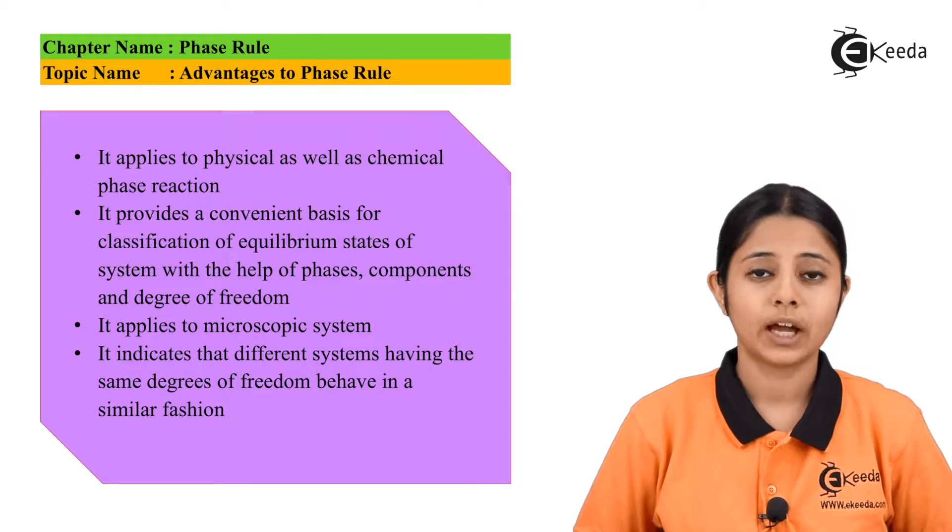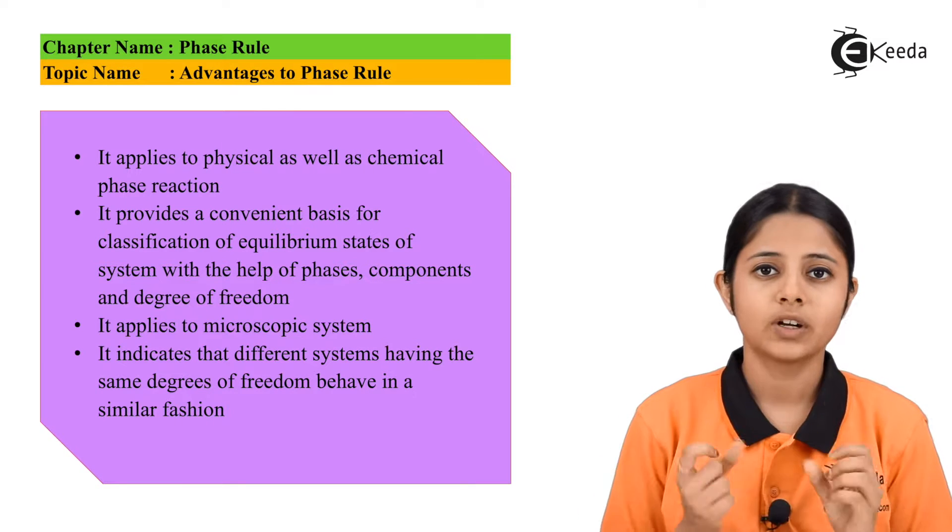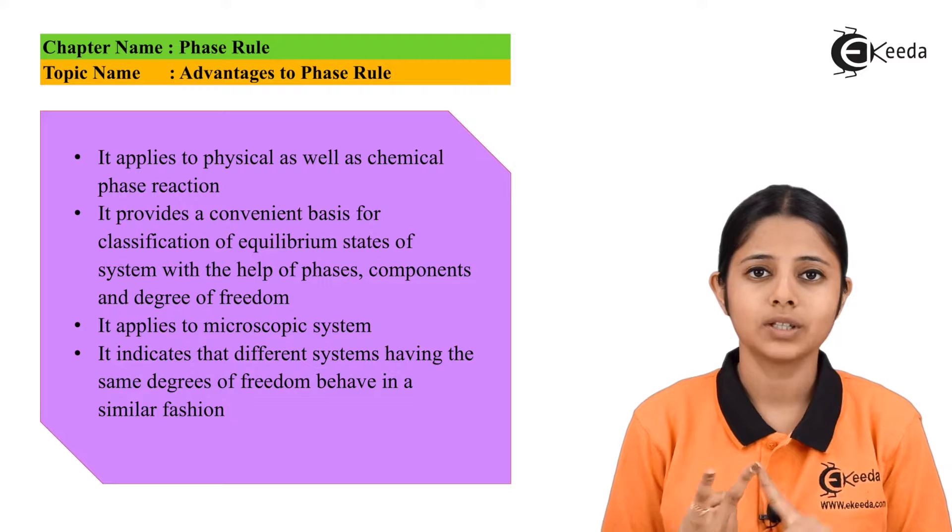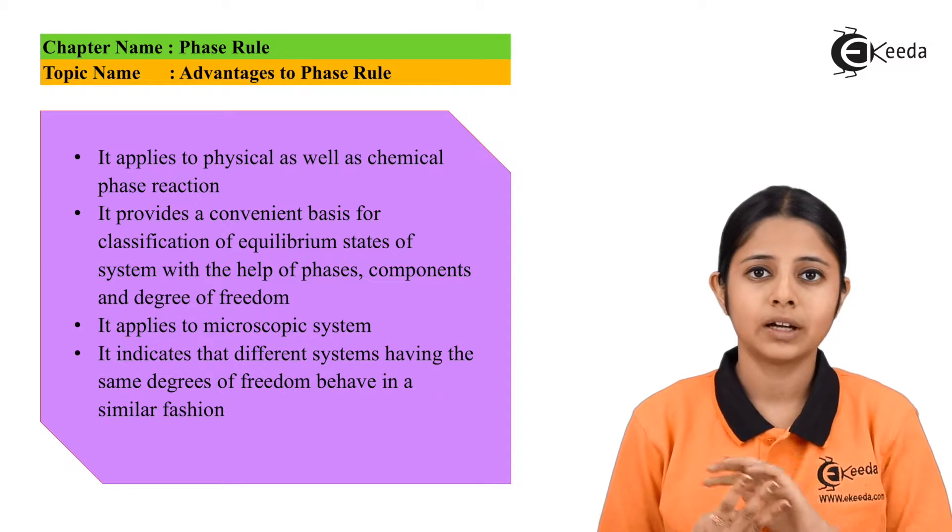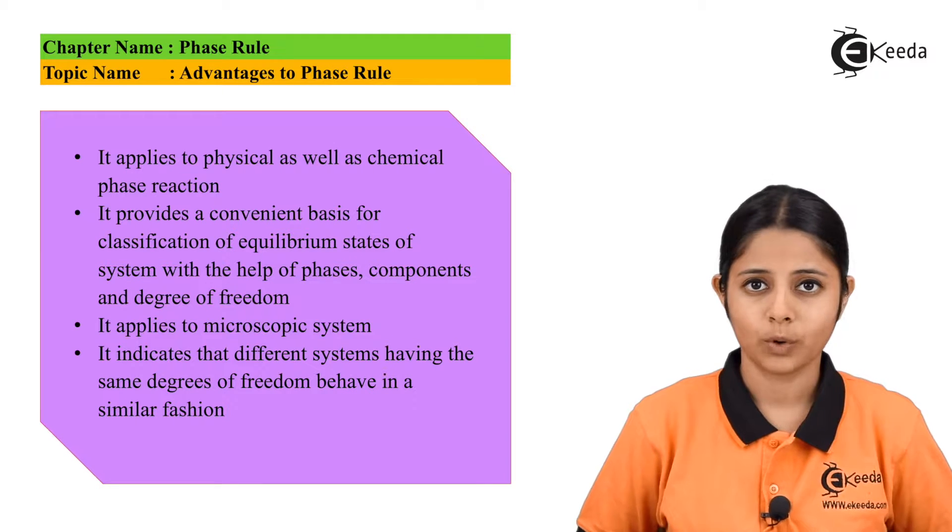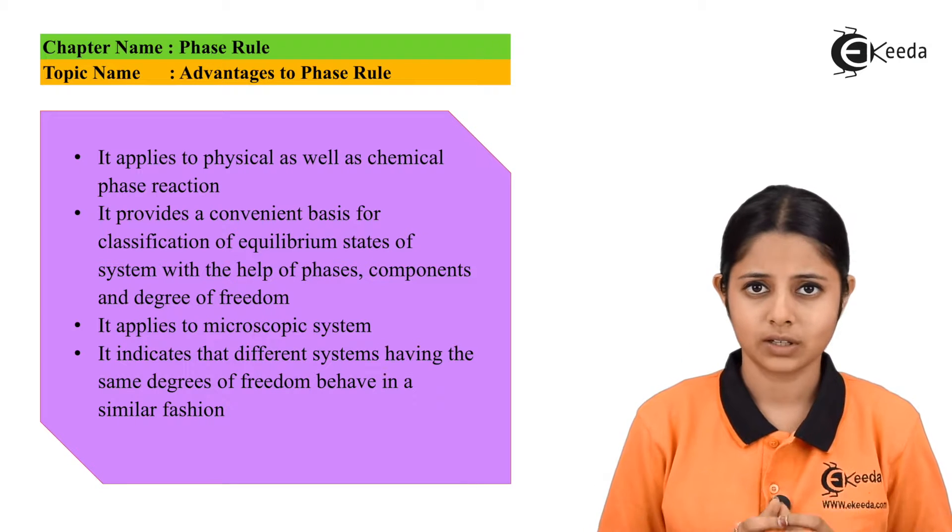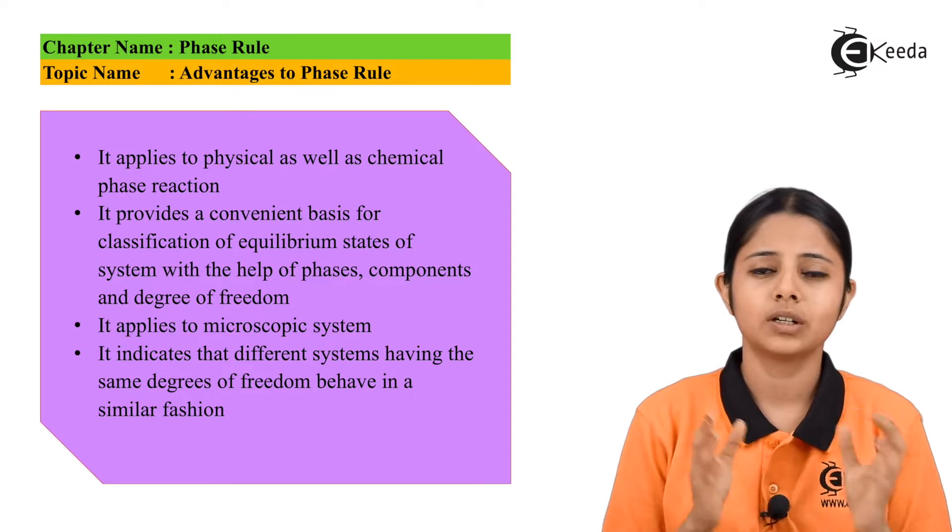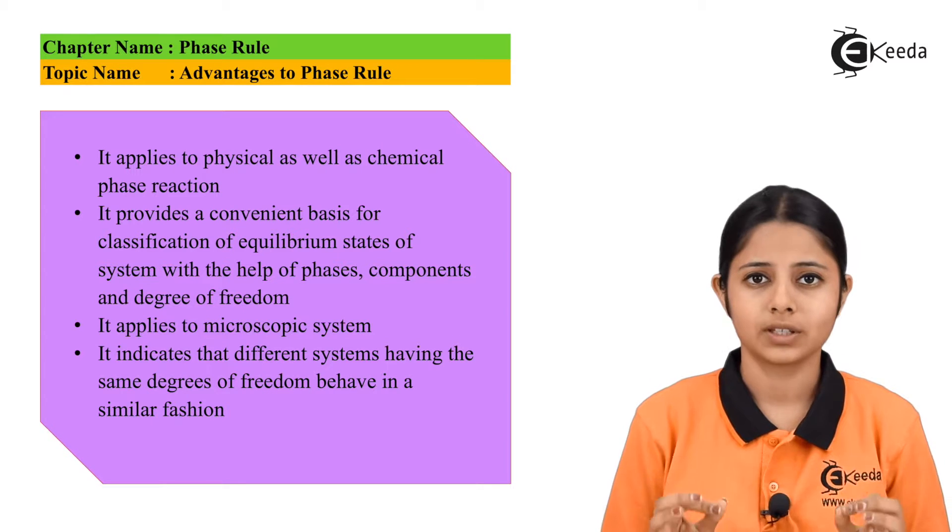The second advantage we have of phase rule are the parts which it relies on. It relies on phases, components and degrees of freedom. Phases, components and degrees of freedom are the three points or three properties a phase rule will always look upon in any system. And because all of these three are present in all kinds of systems whether big or small, whether physical or chemical, it will give us an equilibrium point for each and every system.